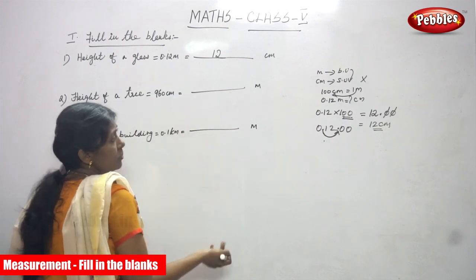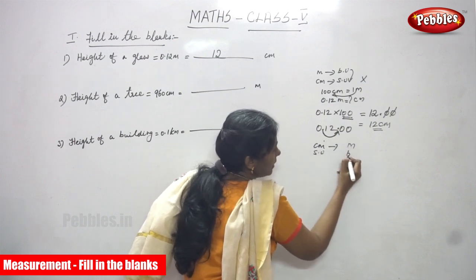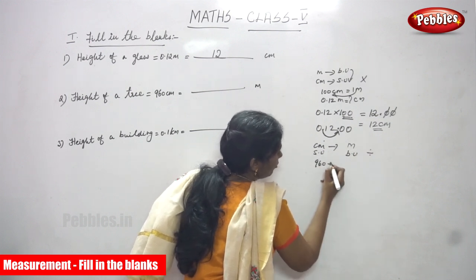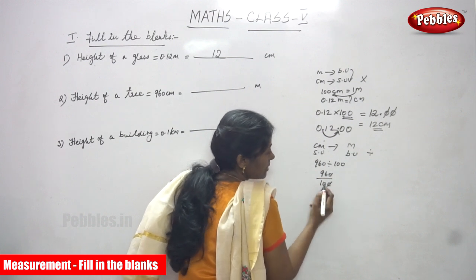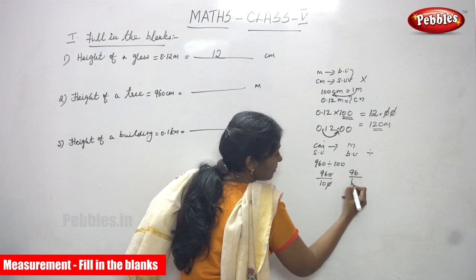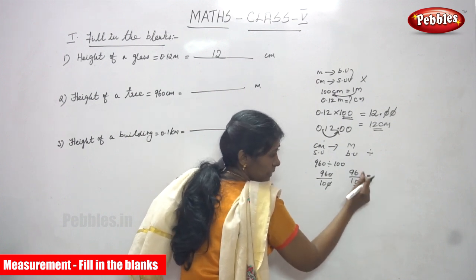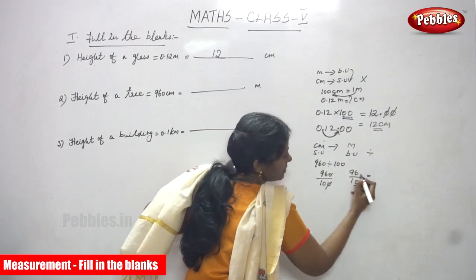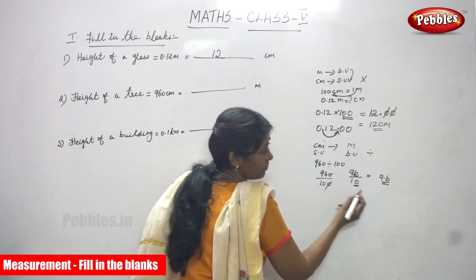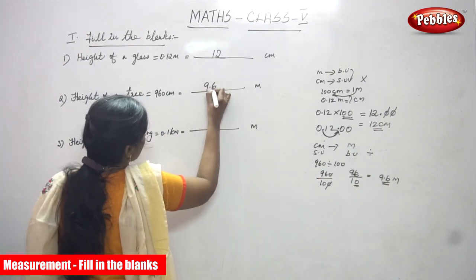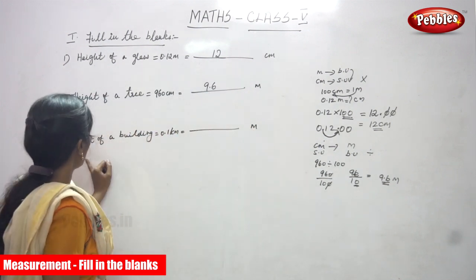Centimeter is a smaller unit and meter is a bigger unit. Converting smaller to bigger means division. So 960 divided by 100 — cancel two zeros, leaving 96 divided by 10. There is one zero in 10, so the decimal point moves one place to the left. The answer is 9.6 meters.